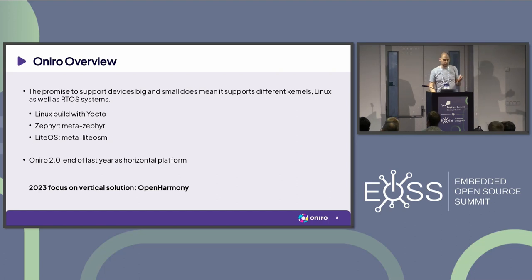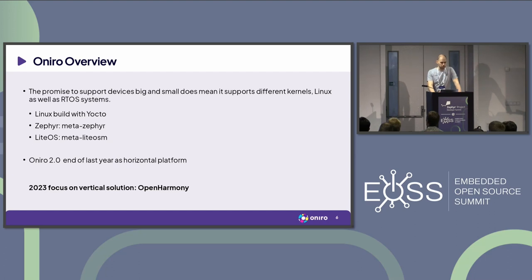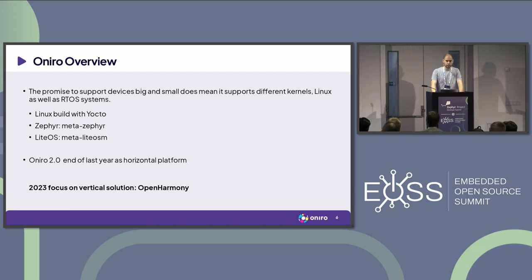Neuro has the promise of building for devices big and small — scaling up from MCUs to normal application processors and into servers. That is obviously a very difficult thing to do with just one kernel. The choice of Linux was obvious, but on the MCU space we needed to look for something else. When we started on Neuro, we looked around and Zephyr was the most promising option. Our complete build tooling is built around Yocto. For Zephyr there was MetaZephyr, which was a good starting ground. We also support other RTOS systems such as LightOS and experimented with FreeRTOS.